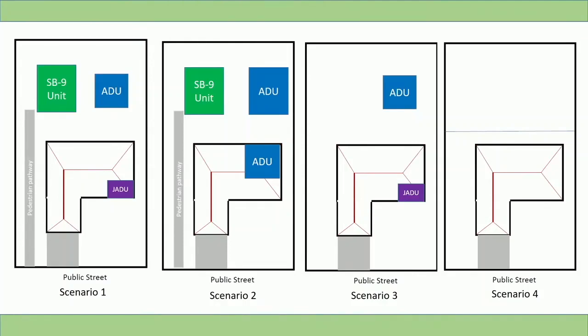In the third scenario, a property developed with one single-family residence, an ADU, and/or a JADU could add one SB9 unit. Access to the SB9 unit would be from a walking path to the unit's front door, and parking would be in an enclosed garage. In this scenario, the property is not eligible for an urban lot split.